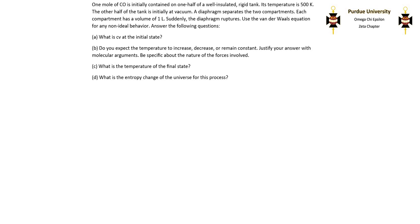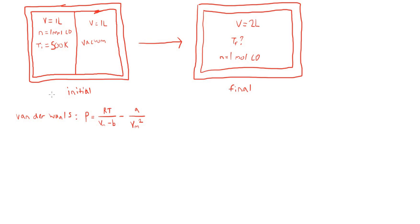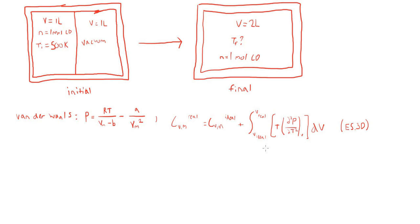The first thing it asks us to find is the initial constant volume heat capacity of the initial state. The gas behaves according to the Van der Waals equation of state, so we need to calculate the constant volume heat capacity as if it were a real gas and not ideal. I'm going to use equation E5.3D in the textbook, which gives an expression for the constant volume heat capacity of a real gas — equal to the ideal constant volume heat capacity plus a correction term for non-idealities.